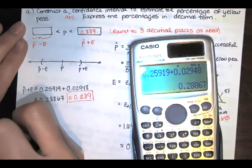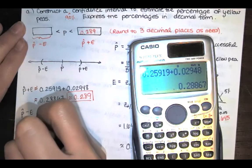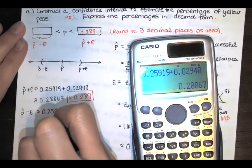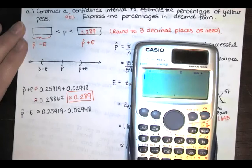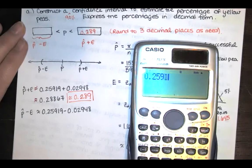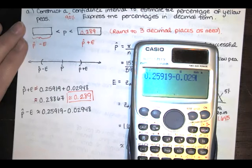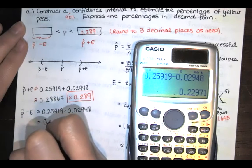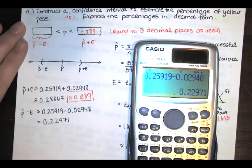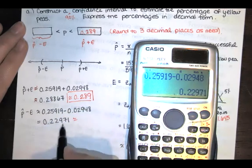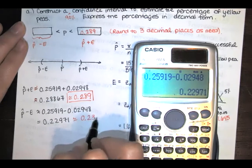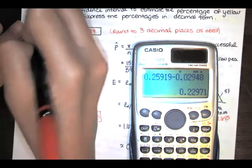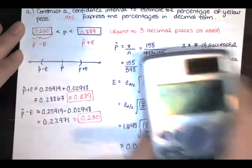If I want the lower bound, I need p-hat minus the error now. We get 0.22971, and if I'm rounding to three decimal places, that seven would turn that nine into a zero and that would make that approximately 0.230.